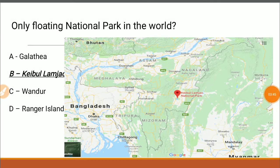The next question: what is the only floating national park in the world? We have to understand how a national park can float. The answer is Keibul Lamjao National Park, situated in the Bishnupur district of Manipur. It is called floating because there is a lot of shrubbery and grass floating on the water of the Loktak Lake, and this floating grassland is called Phumdi.